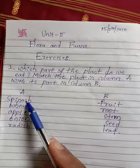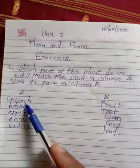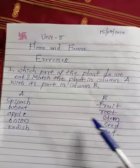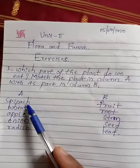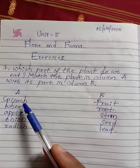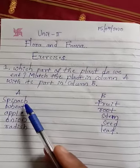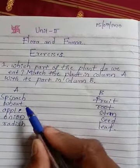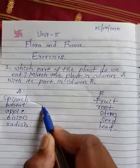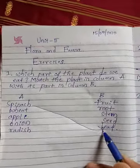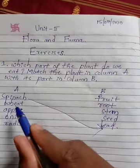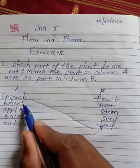Now we are matching each item. In column A, spinach — look at the spinach plant. Which part of the spinach plant are we eating? Yes, students — leaf. So we are eating the leaf of the spinach plant. So spinach is matched with leaf.